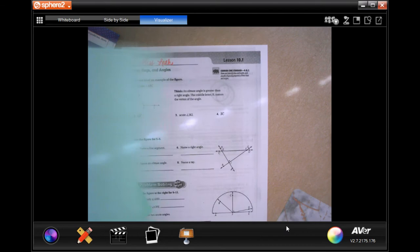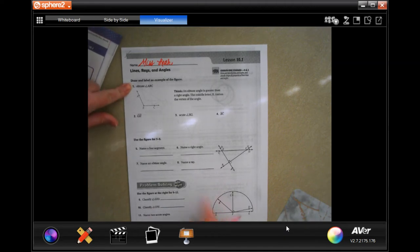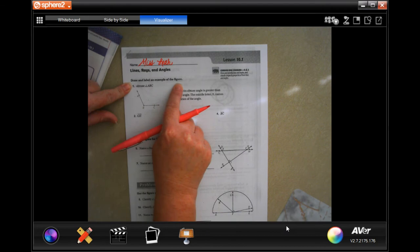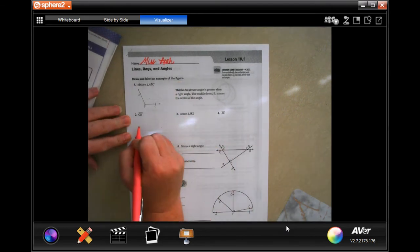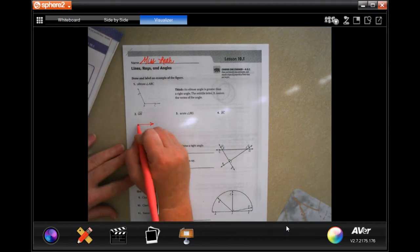We're going to go ahead and get started with number two. For G and H, it wants us to draw and label an example of the figure. Well, G and H is a line. That's it, guys.